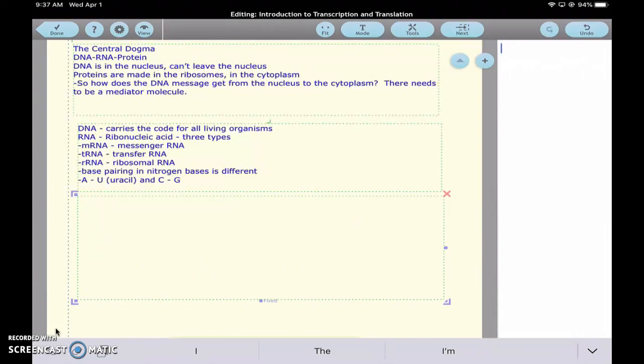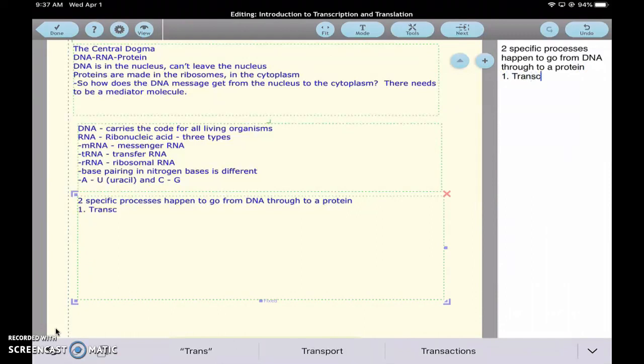So there are two specific processes that happen to go from DNA to protein. Number one: transcription is DNA to mRNA. And then translation is mRNA to protein.